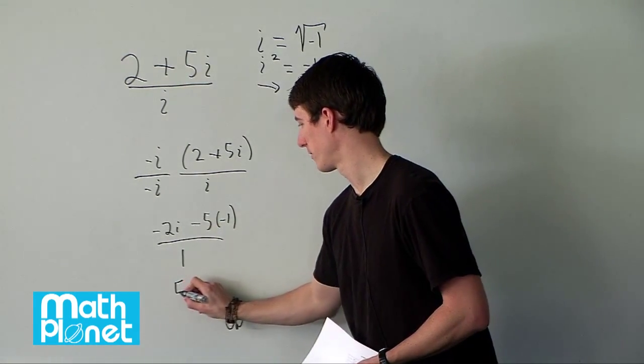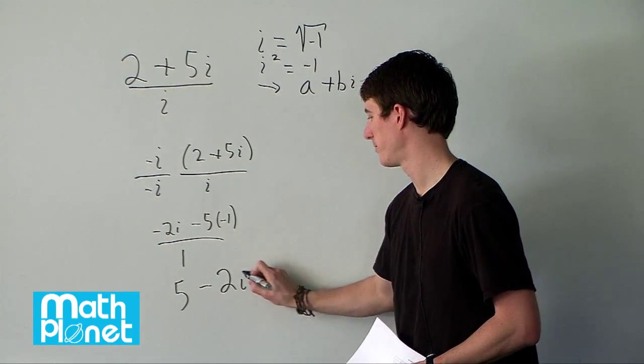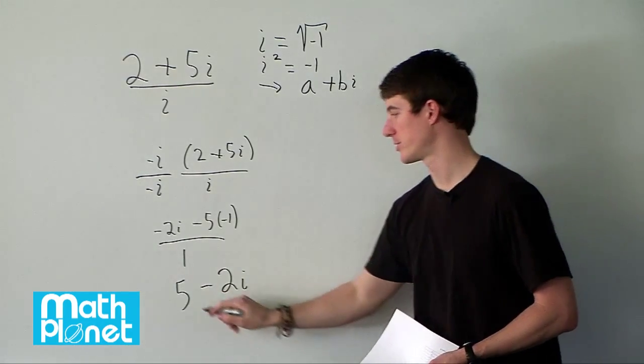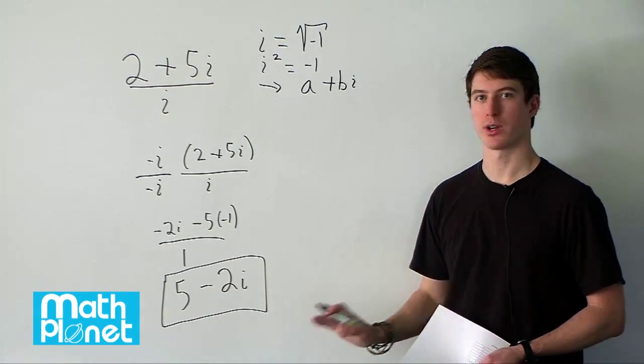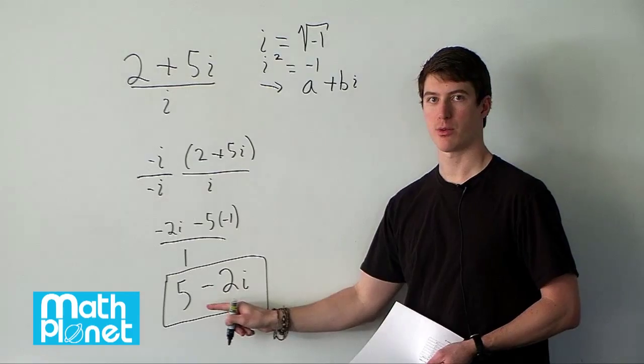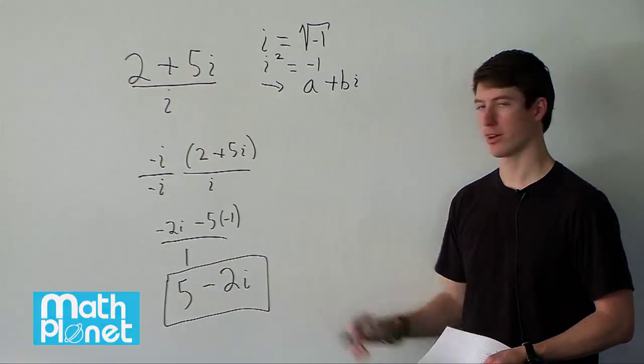We can multiply this negative 1 times this 5. So we get 5 from that minus 2i. So in this case a and b are 5 and negative 2. So this is the same as this original expression written in the more common form where we have some real number plus or minus some other real number multiplied by the imaginary number i. And that's the final answer.